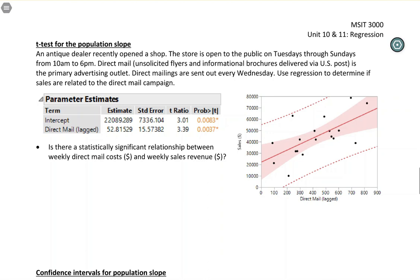An antique dealer recently opened a shop and the shop is open to the public Tuesdays through Sundays. Direct mail, which is the unsolicited flyers and informational brochures you get through the mail, is the primary advertising outlet. Direct mailings are sent out every Wednesday and we're going to use regression to determine if sales are related to the direct mail campaign.